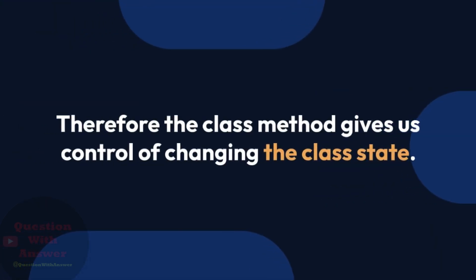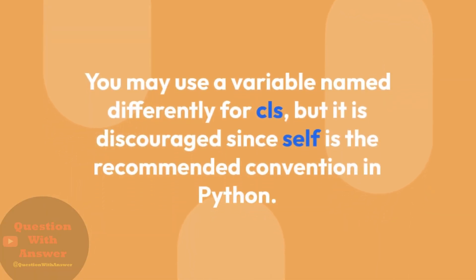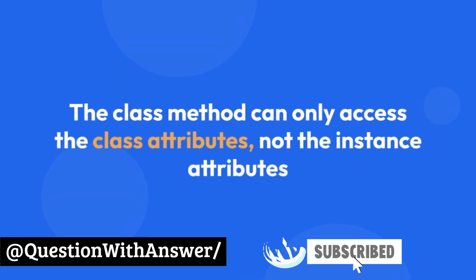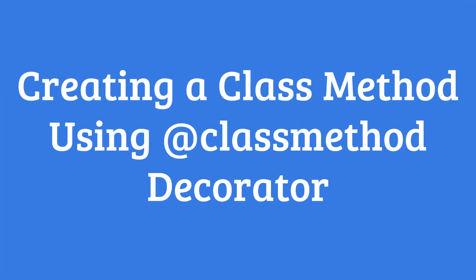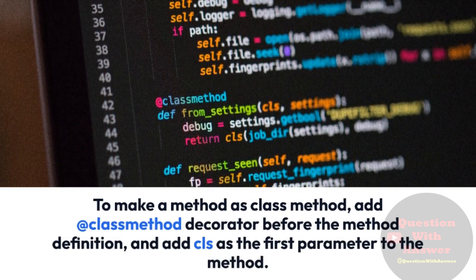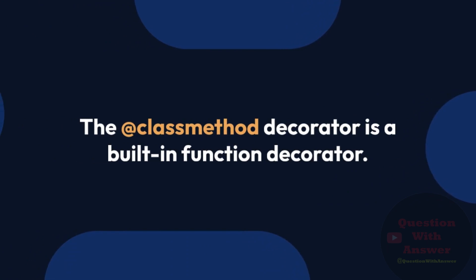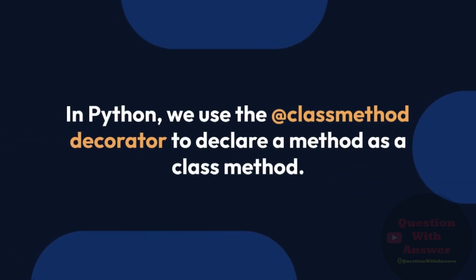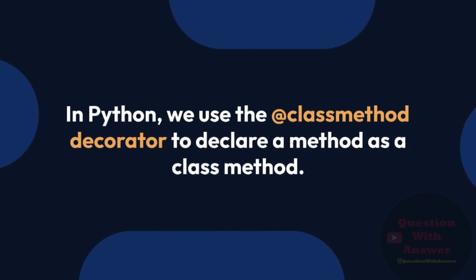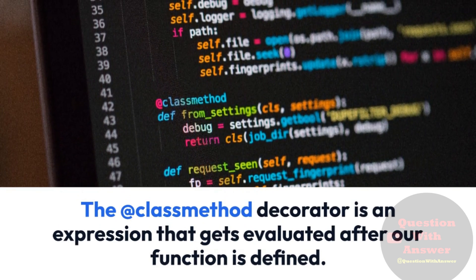Therefore, the class method gives us control of changing the class state. You may use a variable named differently for cls, but it is discouraged since cls is the recommended convention in Python. The class method can only access class attributes, not instance attributes. To make a method a class method, add the @classmethod decorator before the method definition and add cls as the first parameter. The @classmethod decorator is a built-in function decorator — it is an expression that gets evaluated after our function is defined.